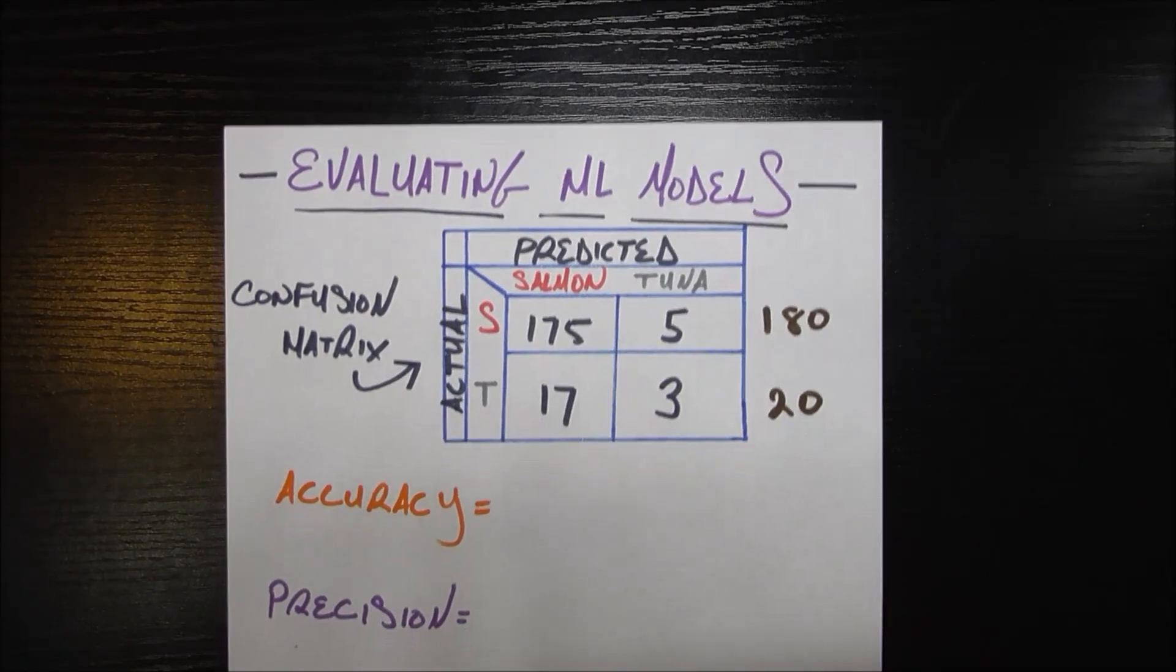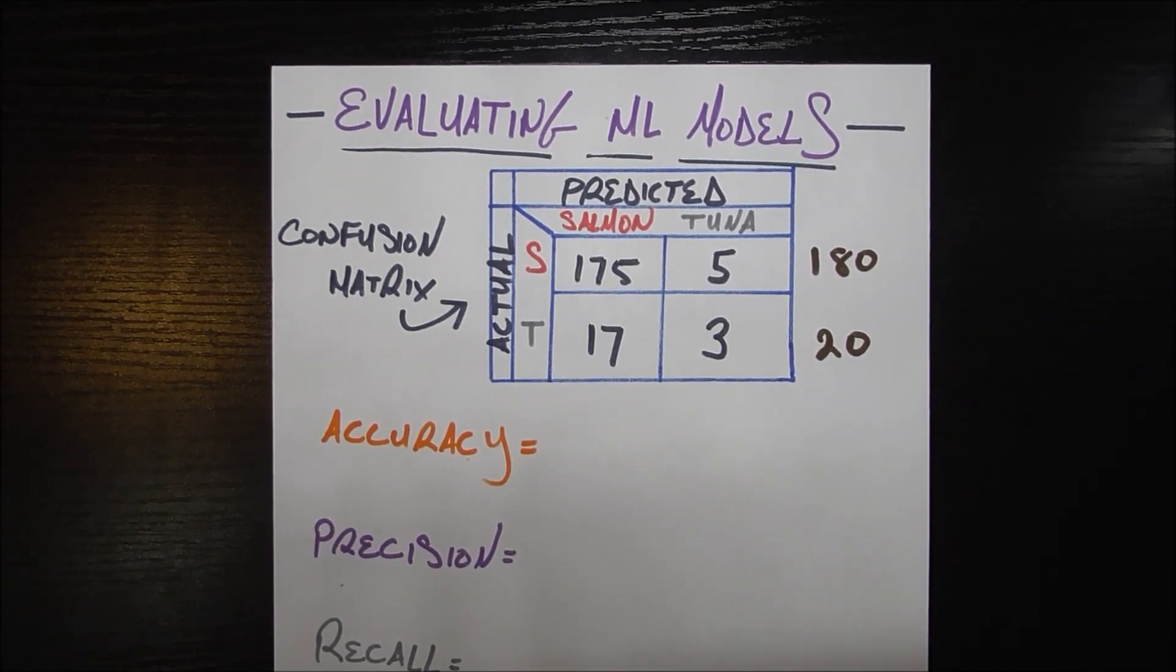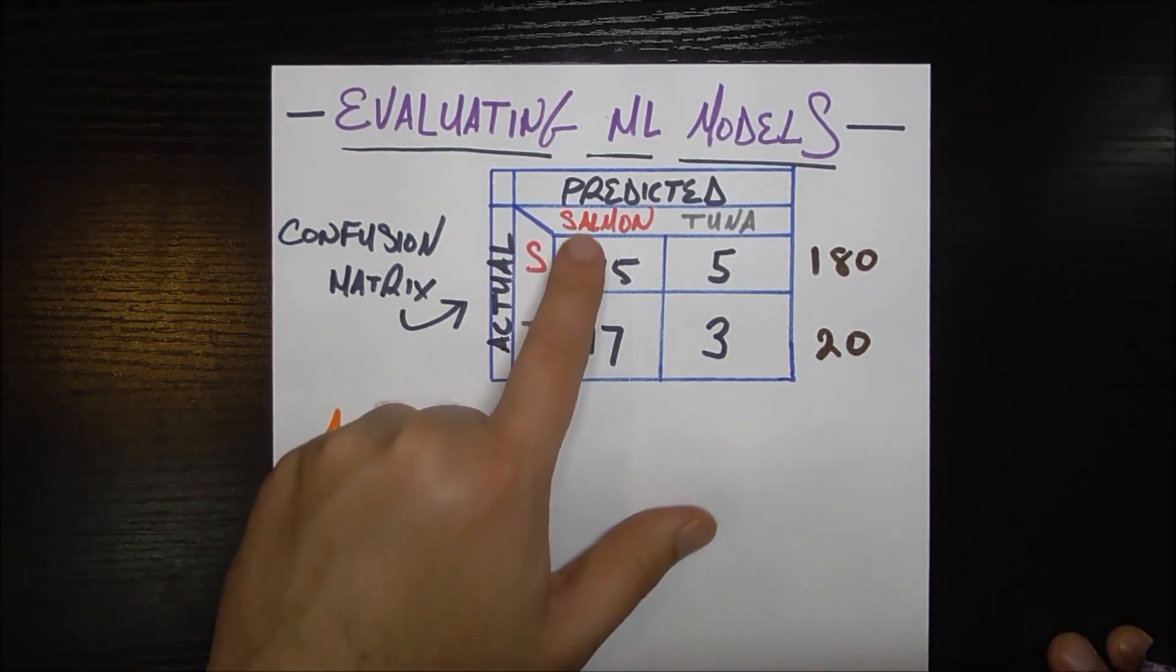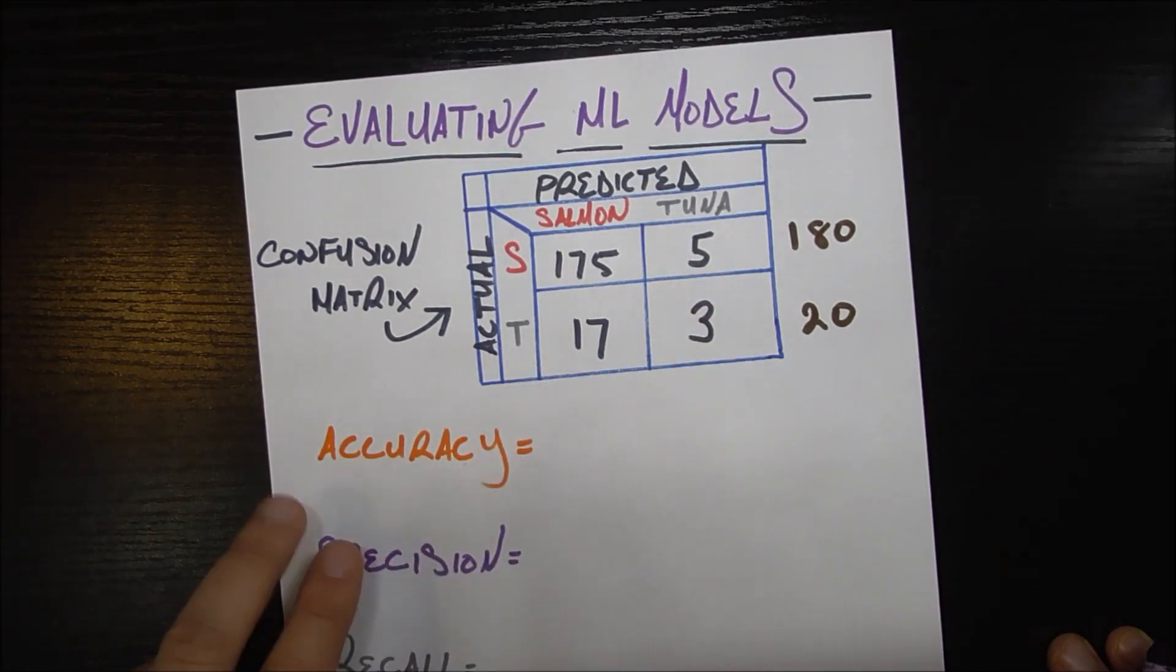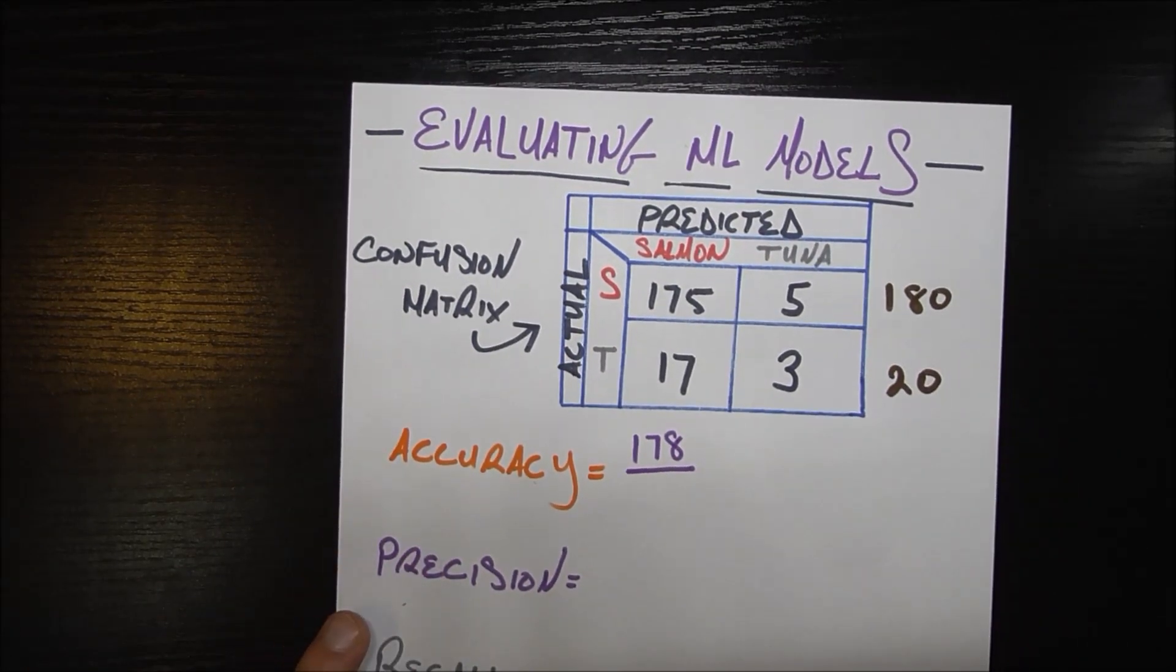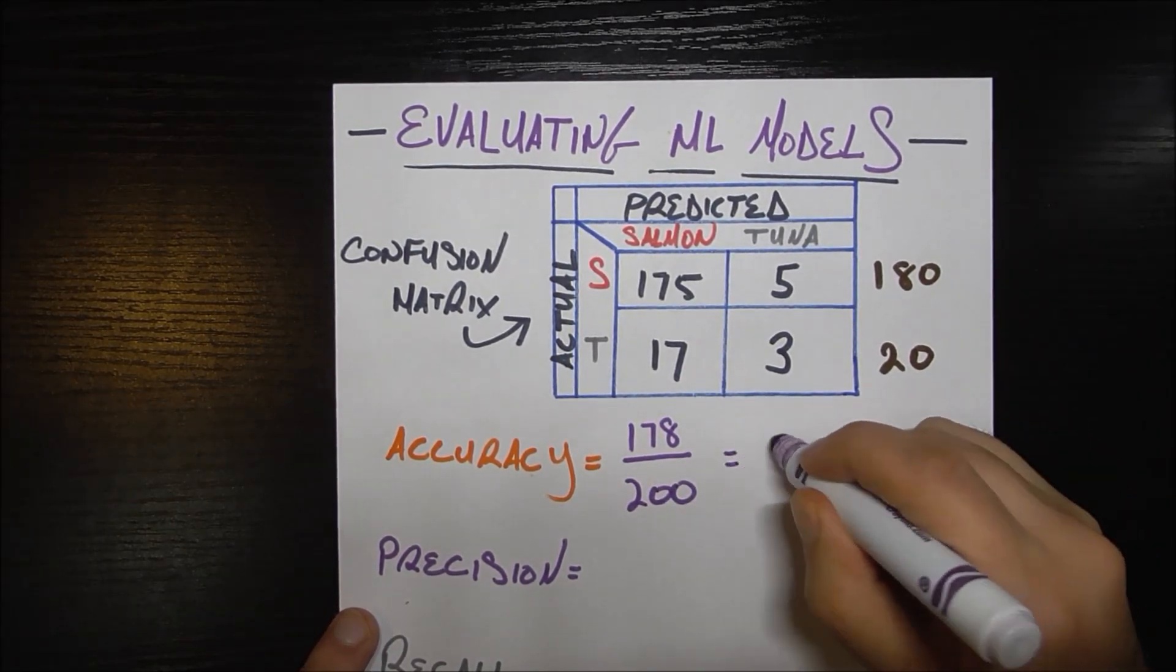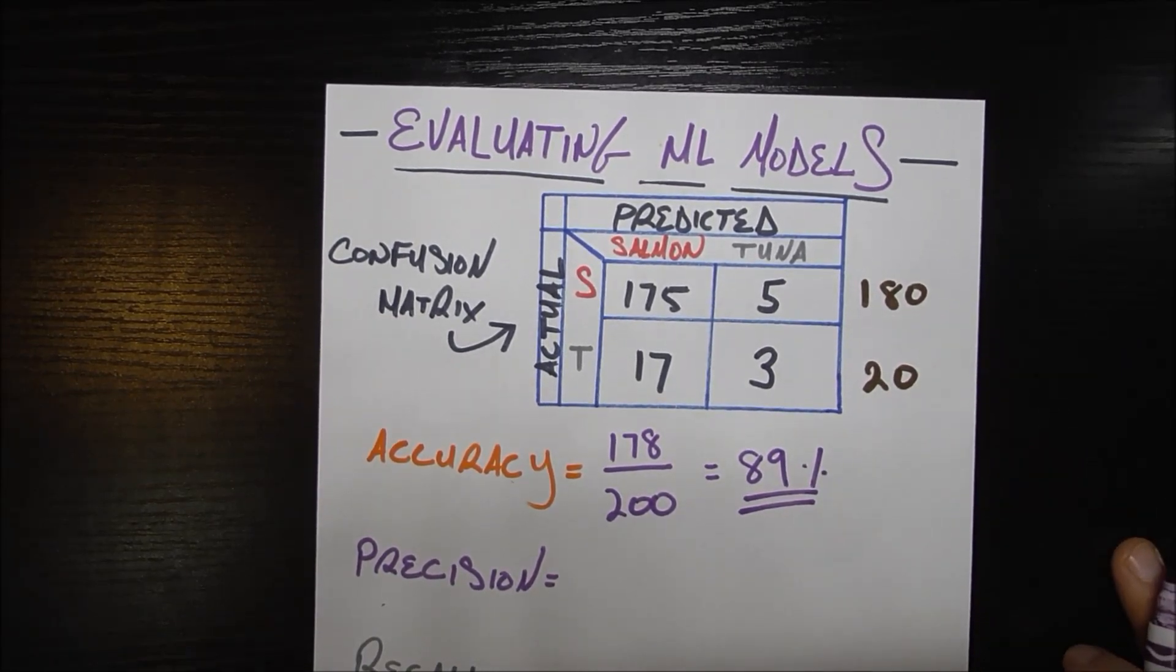Let's go ahead and calculate that seemingly obvious accuracy metric. Accuracy simply measures how many correct guesses I made out of how many total guesses I made. Correct would be this 175 which is predicting salmon and it's actually a salmon, plus this three predicting tuna and it's actually a tuna. So I get 178 correct guesses out of how many total guesses. If you add all this up, this 180 and 20, it's 200. So our accuracy comes out to something like 89 percent. So it seems pretty good right, we're getting a really high accuracy, so what's the problem?